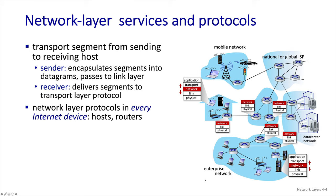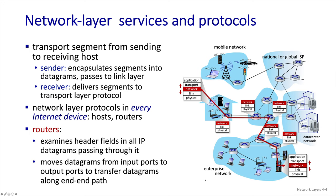Unlike the transport layer, which existed in hosts at the edge of the network but not in routers, the network layer exists in every internet device, whether it's an edge device or a core device. As the datagrams pass through routers, they examine the header fields of the network layer and make forwarding decisions to move the datagram from the input port to the correct output port so that it will eventually reach its destination.